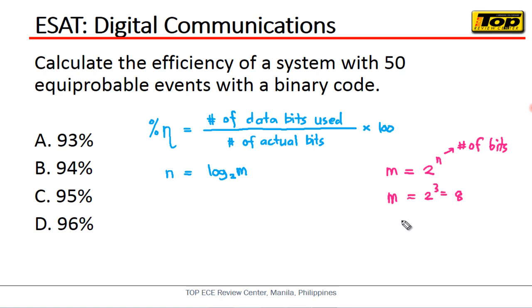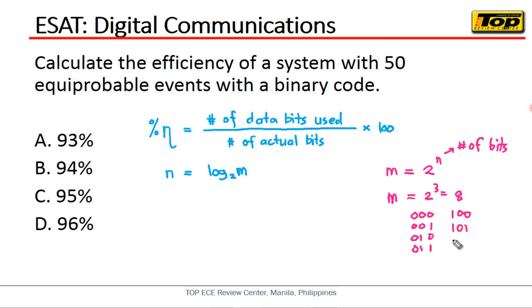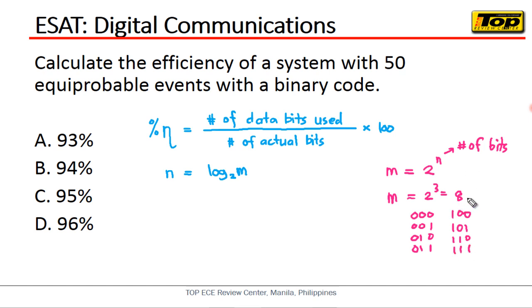What are those 8 combinations? They are: 000, 001, 010, 011, 100, 101, 110, and 111. Those are the 8 possible combinations.